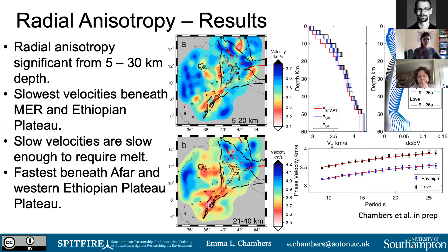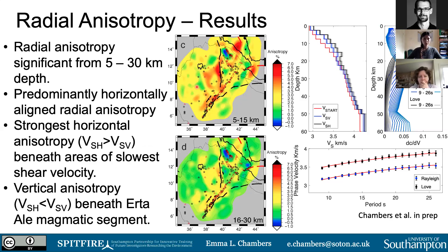We also find that the fastest velocities are beneath the Afar region and the western plateau. Now for the radial anisotropy results: red colors represent horizontally aligned anisotropy — horizontal structures — while blue colors represent vertically aligned anisotropy. Predominantly the reds and yellows show horizontally aligned radial anisotropy, which is not surprising given that horizontal VSH was dominant on average. However, we do see beneath the Erta Ale magmatic segment an area of vertically aligned radial anisotropy.